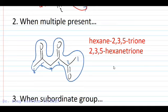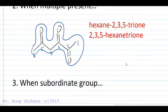We could alternatively name this as 2,3,5-hexanetrione if we chose to bring the locants out front. Notice the E here separates two consonants, that's why it was put in, to separate those consonants.